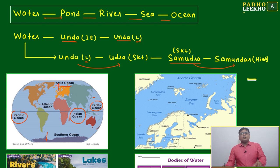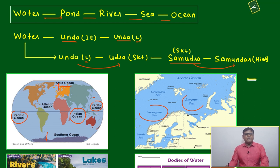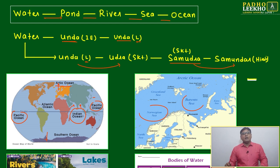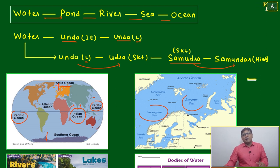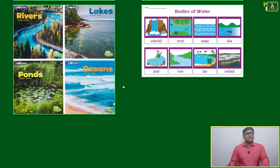Within one ocean, multiple seas are created at the confluence. For example, the Indian Ocean is divided into two parts: on the east side of India it is the Bay of Bengal, and on the west side of India it is the Arabian Sea.